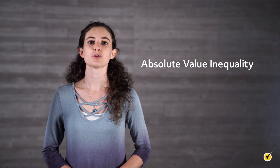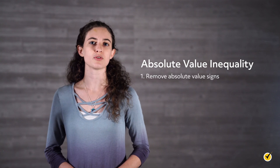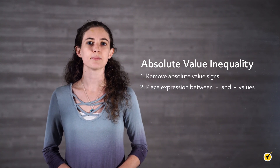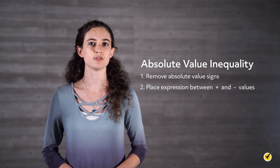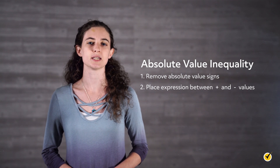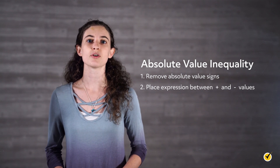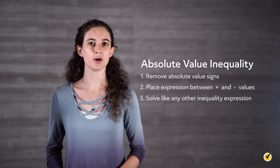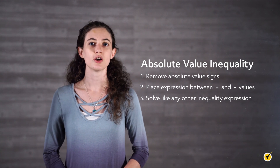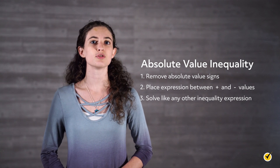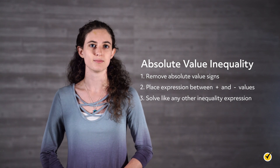To solve an absolute value inequality, remove the absolute value signs and place the expression between the positive and negative values of the inequality given to you. Then solve the problem like you would any other inequality expression, remembering to do the same thing to all three parts of the expression.